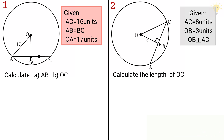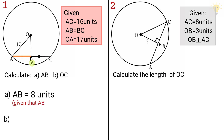In the first example of Theorem 1, we are given that AC is 16 units, AB is equal to BC, and OA is 17 units. We need to calculate the length of AB. OB is the line from the center of the circle to the midpoint of chord AC. Since AB equals BC and AC is 16 units, AB is 16 divided by 2, which is 8 units.